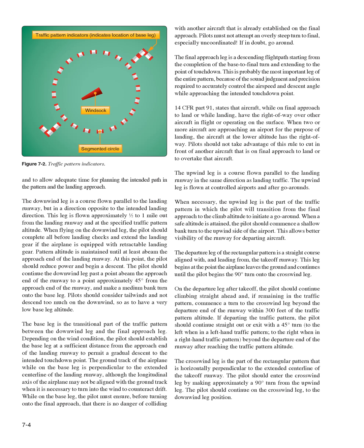The downwind leg is a course flown parallel to the landing runway, but in a direction opposite to the intended landing direction. This leg is flown approximately half to one mile out from the landing runway and at the specified traffic pattern altitude. When flying on the downwind leg, the pilot should complete all before-landing checks and extend the landing gear if the airplane is equipped with retractable landing gear. Pattern altitude is maintained until at least abeam the approach end of the landing runway, at which point the pilot should reduce power and begin a descent. The pilot should continue the downwind leg past a point abeam the approach end of the runway to a point approximately 45 degrees from the approach end of the runway, and make a medium bank turn onto the base leg. Pilots should consider tailwinds and not descend too much on the downwind, so as to have a very low base leg altitude.